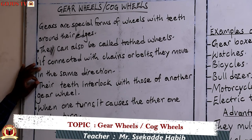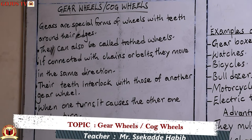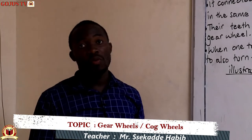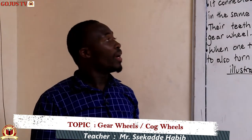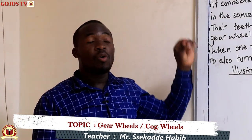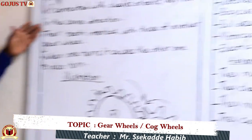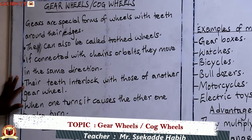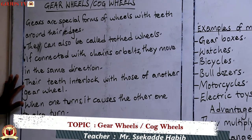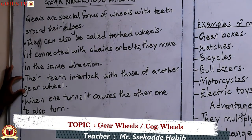If they are connected with chains or belts, they move in the same direction. They can be connected in a series — two, three, or even more. When these gear wheels are connected, they can all move in the same direction. Their teeth interlock with those of another gear.